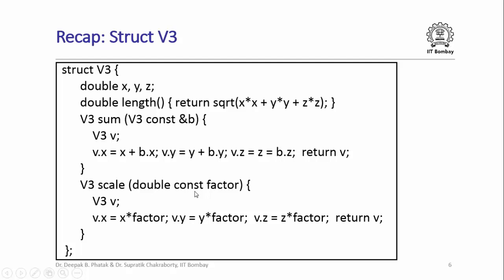Recall the three dimensional vector structure we had already studied in the last couple of lectures. We had defined a C++ structure called V3 which had three data members named X, Y and Z to store the Cartesian coordinates of a three dimensional vector. Each of these members was of type double, and we also had three member functions named length, sum and scale for performing different kinds of operations on these three dimensional vectors.